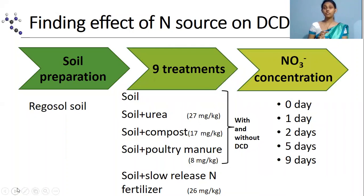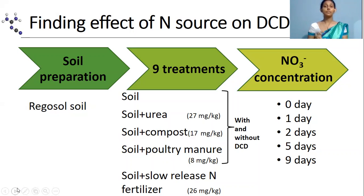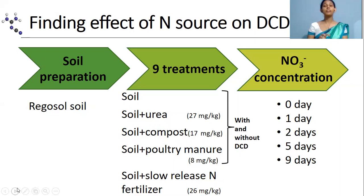After that, a slow-release nitrogen fertilizer was added as the 9th treatment. Finally, five leaching events were conducted and leachate nitrate concentrations were measured using the rapid colorimetric method.